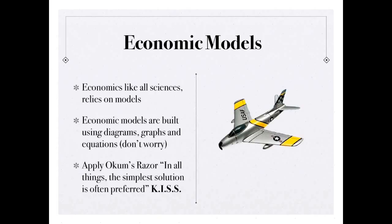There's a theory known as Occam's razor. And it basically reads, in all things, the simplest solution is often preferred. So if we have two equal solutions, one is extremely complex, one is much more simple, usually the simpler solution is going to be the better solution.